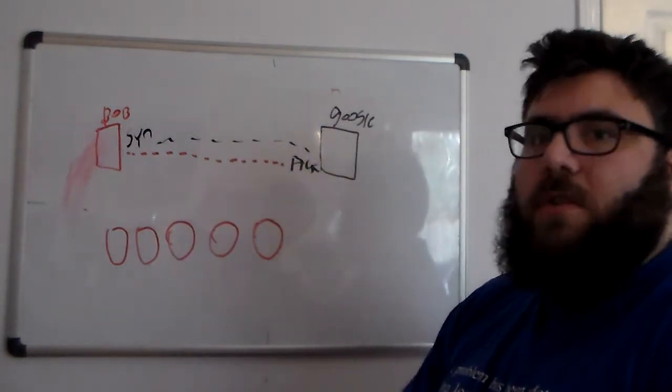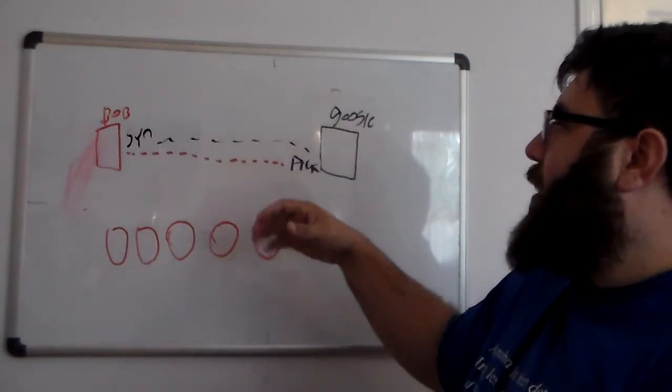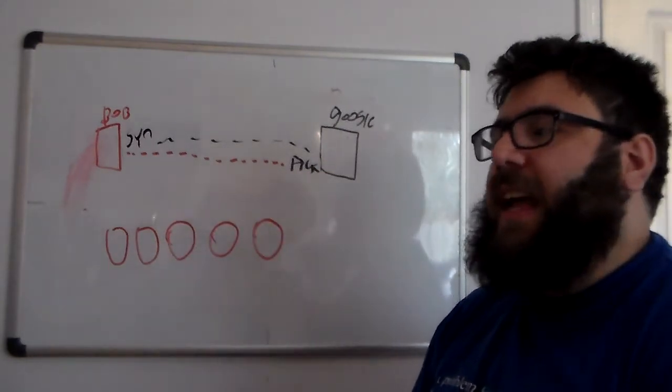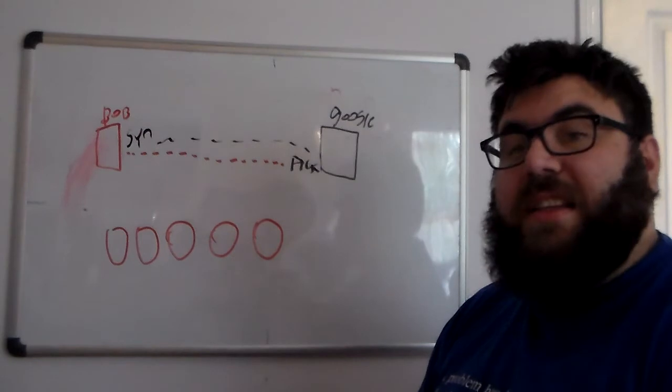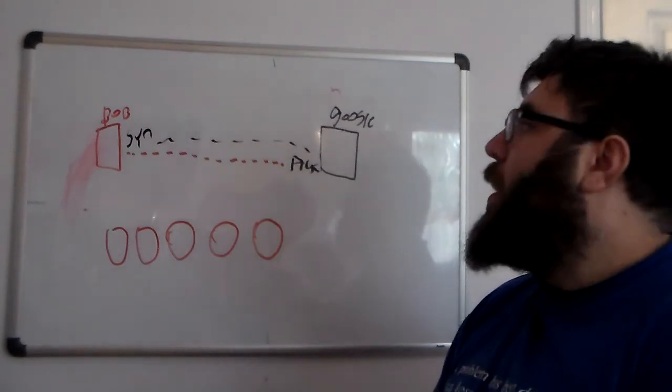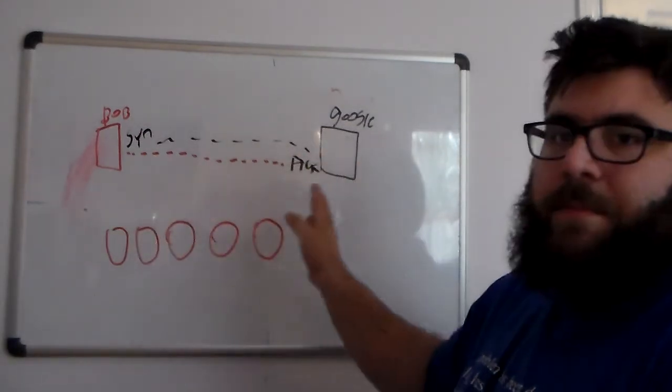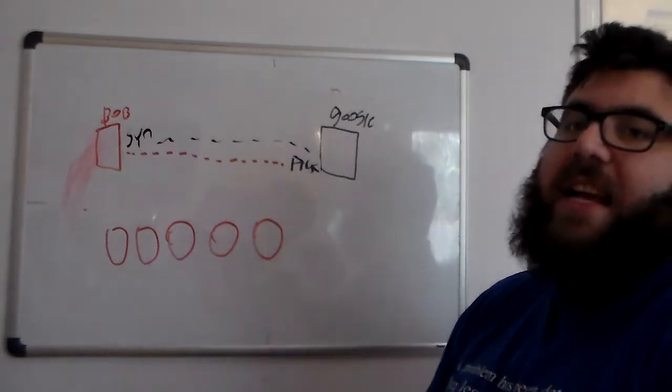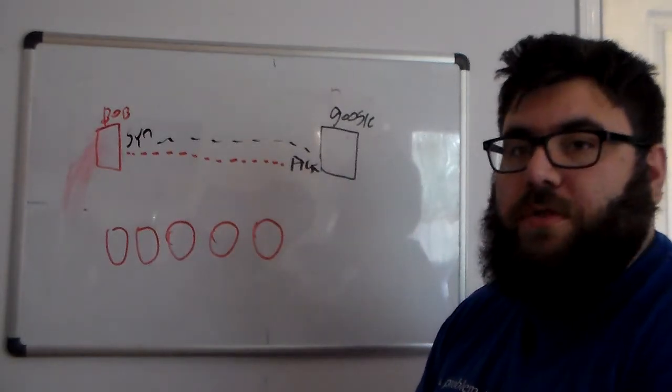Now, half open connections also happen when a session is stale and it hasn't fully disconnected yet. But with a SIN level attack, that's what you'll see.